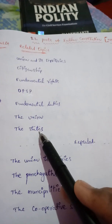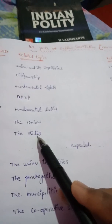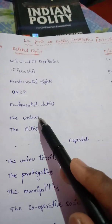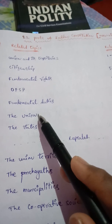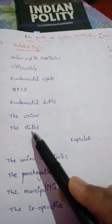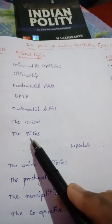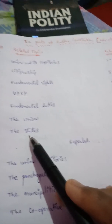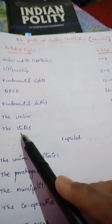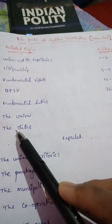Next, executive powers of the state — the Governor is the executive head of the state, but at the centre, the President is the executive head. Next, appointment, terms of office, qualifications, conditions, votes and affirmations, powers, and discharge of functions of ministers to the Governor.